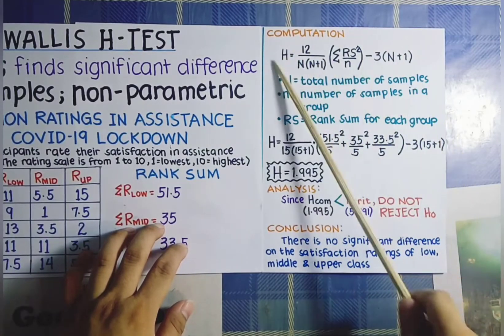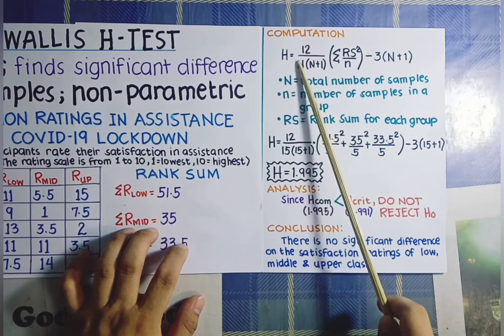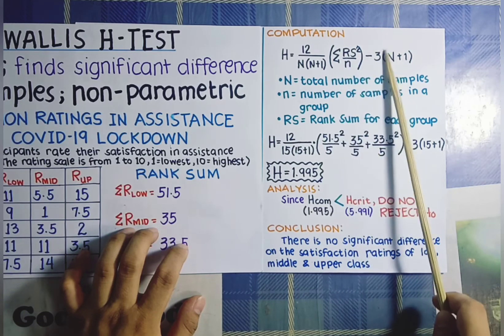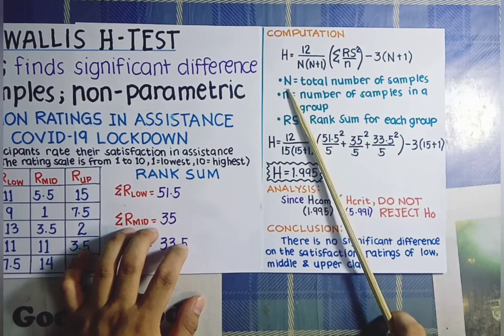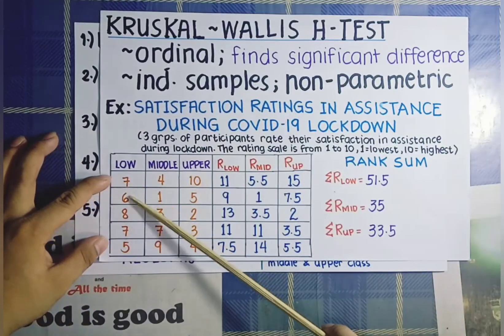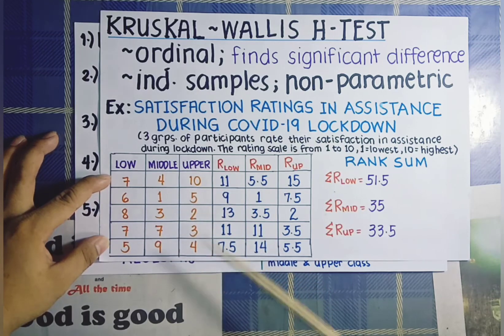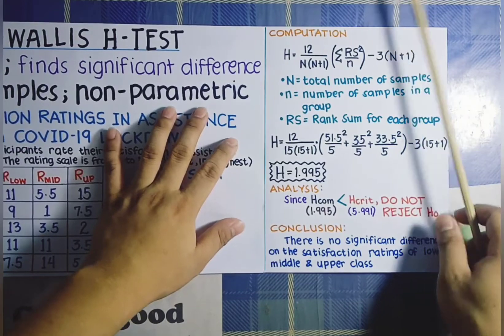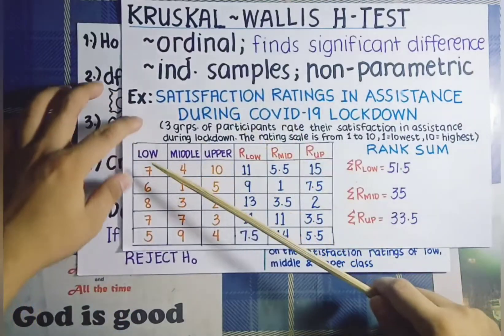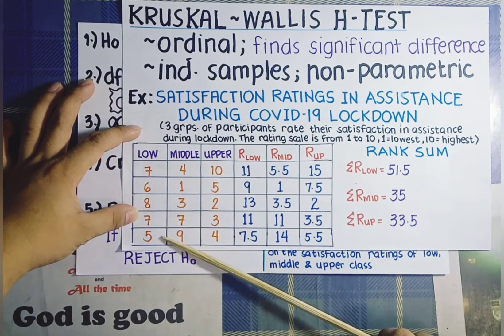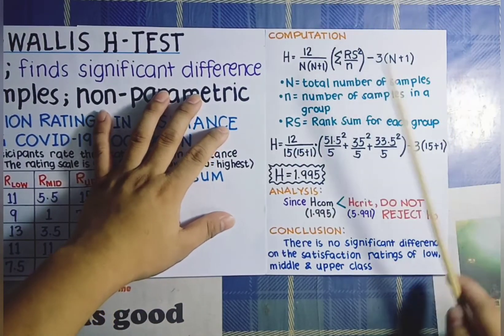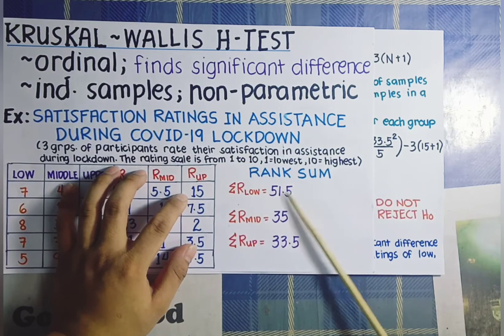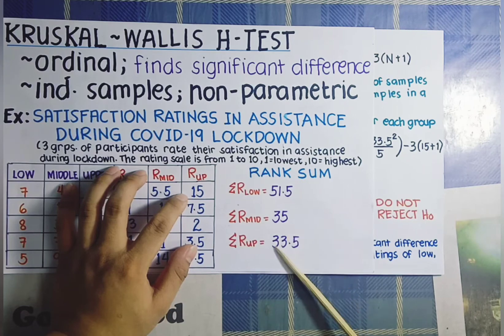The formula for computing the H value is: H = [12 / (N(N+1))] × [Σ(Rs² / n)] − 3(N+1), where capital N is the total number of samples (which is 15), small n is the number of samples in each group, and Rs is the rank sum for each group. We already determined that the rank sum for lower class is 51.5, for middle class is 35, and for upper class is 33.5. Each group has a sample size of 5.